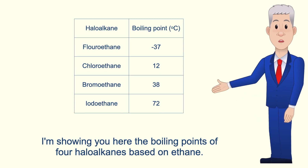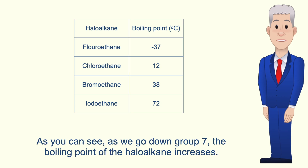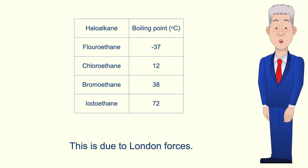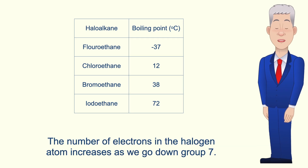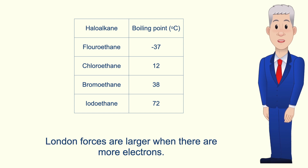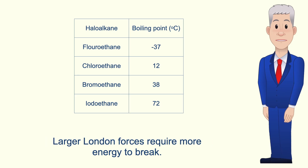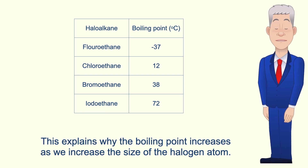Here are the boiling points of four haloalkanes based on ethane. As we go down Group 7, the boiling point of the haloalkane increases, and again this is due to London forces. The number of electrons in the halogen atom increases as we go down Group 7, and London forces are larger when there are more electrons. Larger London forces require more energy to break, which explains why the boiling point increases as the size of the halogen atom increases.